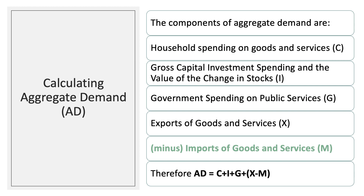So how do we calculate aggregate demand? This is one of the key macroeconomics formulae that you definitely need to know well. Aggregate demand, or AD, is household spending on goods and services — consumption — plus capital spending by businesses and by governments and the change in the value of stocks, essentially capital investment spending, plus government spending on public services such as education and health and social housing. So C plus I plus G.